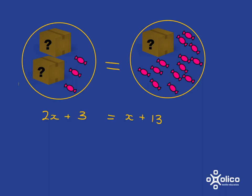And I'm going to work to just getting a box, one box alone over here, and just having loose sweets over there. So the first thing I'm going to do is I'm going to take the sweets out of here. But if I take three sweets out of here, of course to keep it balanced, I must take three sweets out of there.